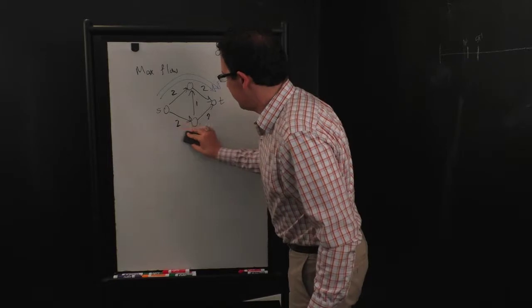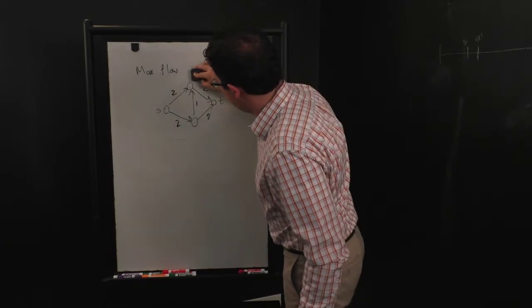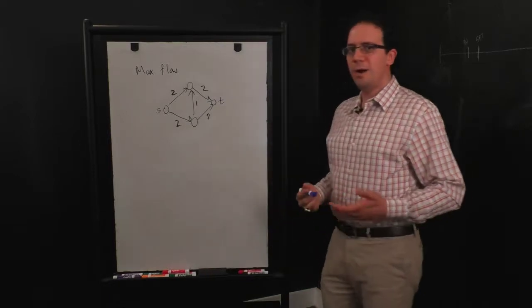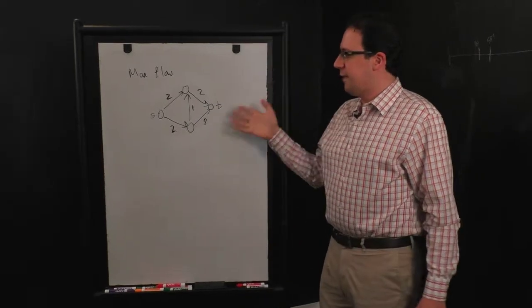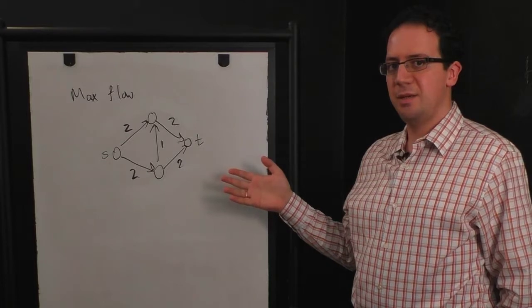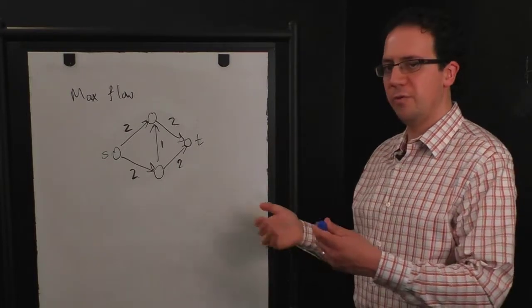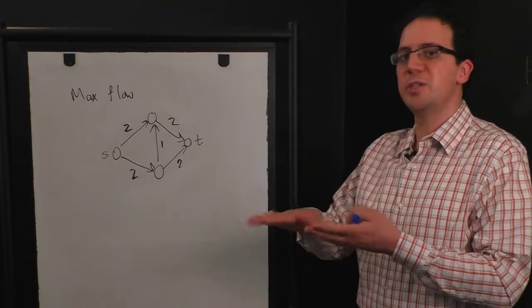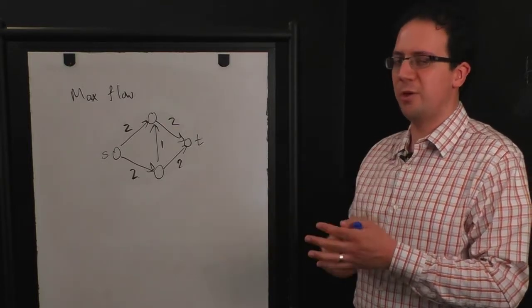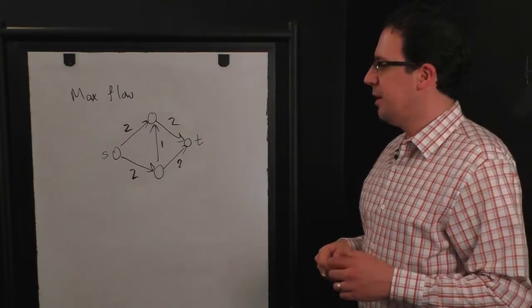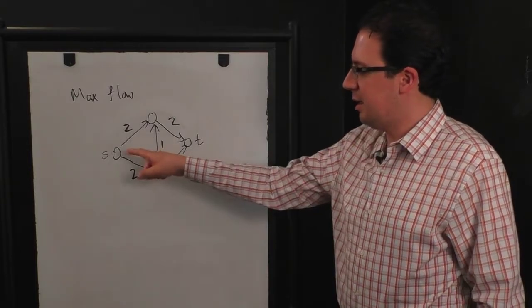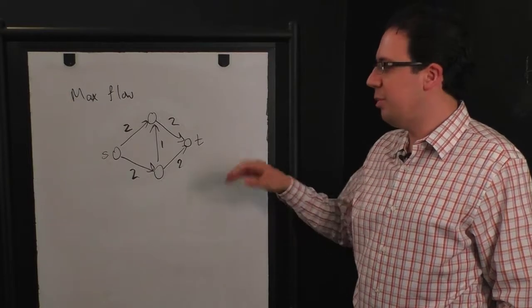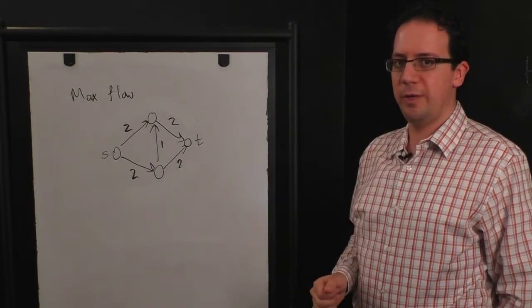So now let's look at a simple greedy algorithm for this that initially is going to fail. Our algorithm is going to be find any edge that has excess capacity. So we're going to build up our flow piece by piece, and excess capacity means you've put some flow on an edge, but the capacity is larger than the flow you've put so far. Find any edge that has excess capacity, or really any path from s to t that has excess capacity, and put one more unit of flow on that path.